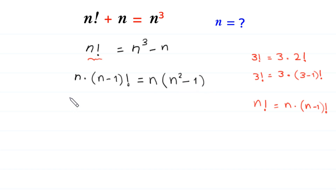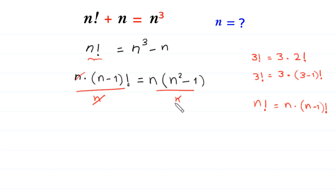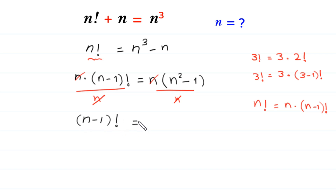Next, we divide both sides of this equation by n. This n cancels with this n on both sides, and we are left with (n minus 1) factorial is equal to n squared minus 1.